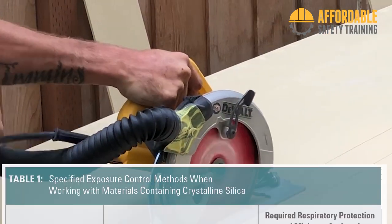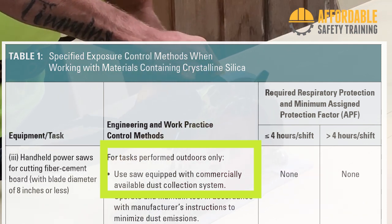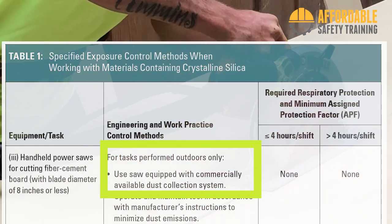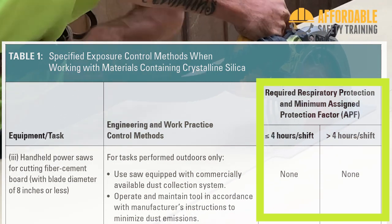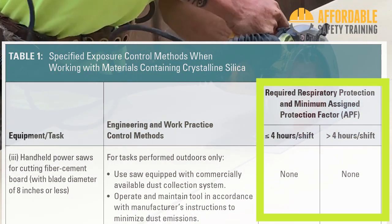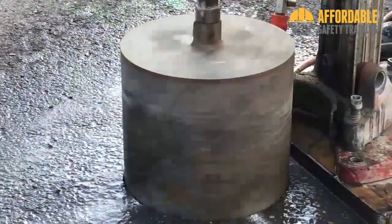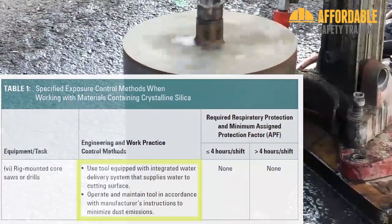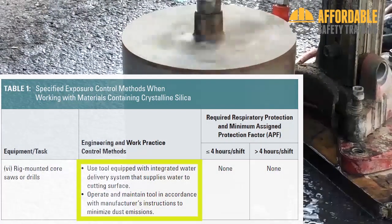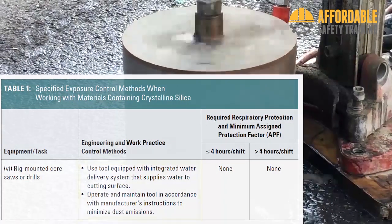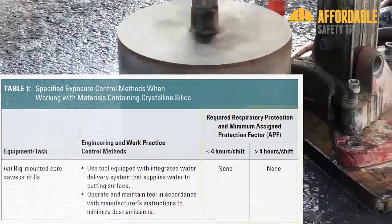For example, Table 1 requires cement fiber board to be cut outside, with a manufacturer-recommended dust collection system. If this is done, the employer does not have to perform any exposure monitoring, and respirators are not required. Rig-mounted core saws must include an integrated water delivery system and be operated in accordance with the manufacturer's instructions. If these requirements are met, no respiratory protection is required.